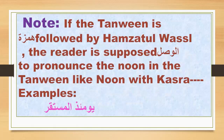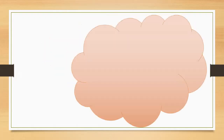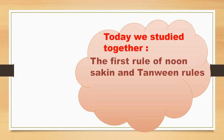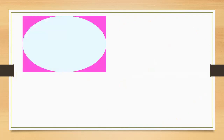If the Tanwin is followed by Hamzat Wasl, the reader is supposed to pronounce the Noon in the Tanwin like a Noon with kasra. Example: 'Yawma izin al-mustaqar.' The other rules with Noon Sakin and Tanwin are: Idgham, Iqlab, and Ikhfa Haqiqi.